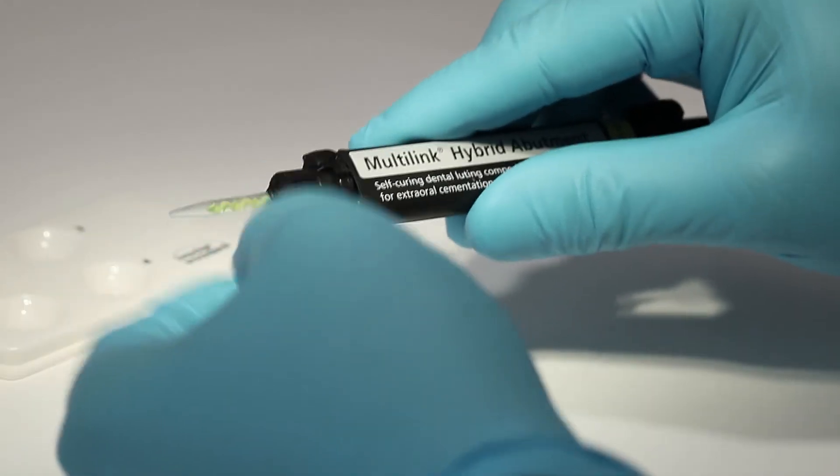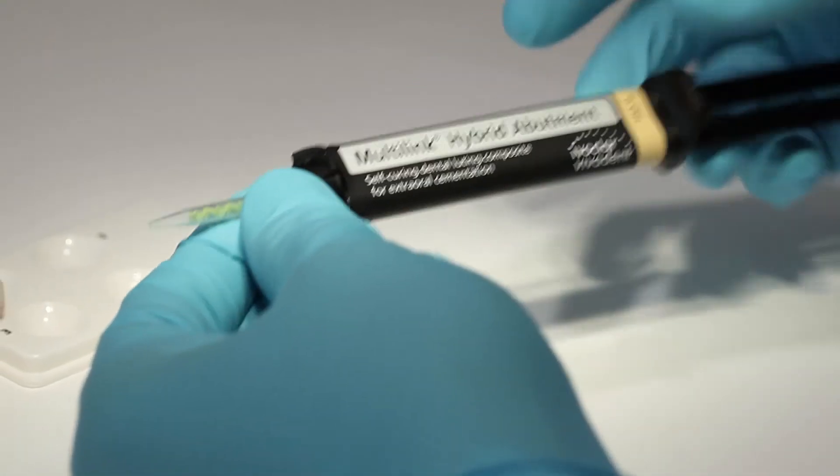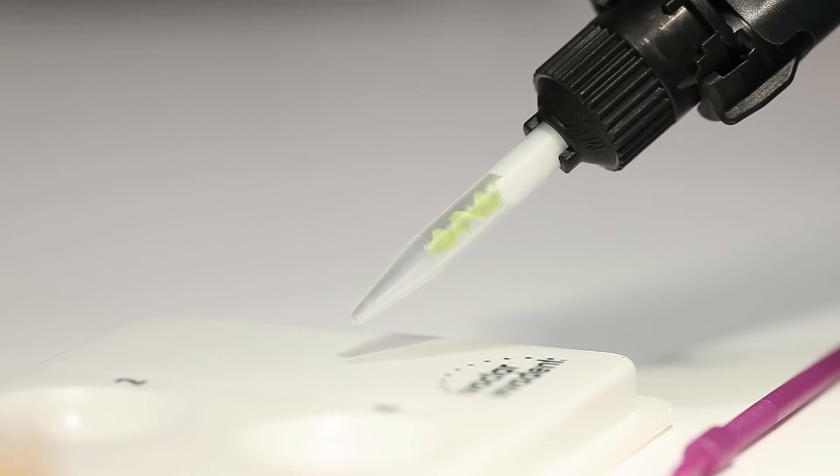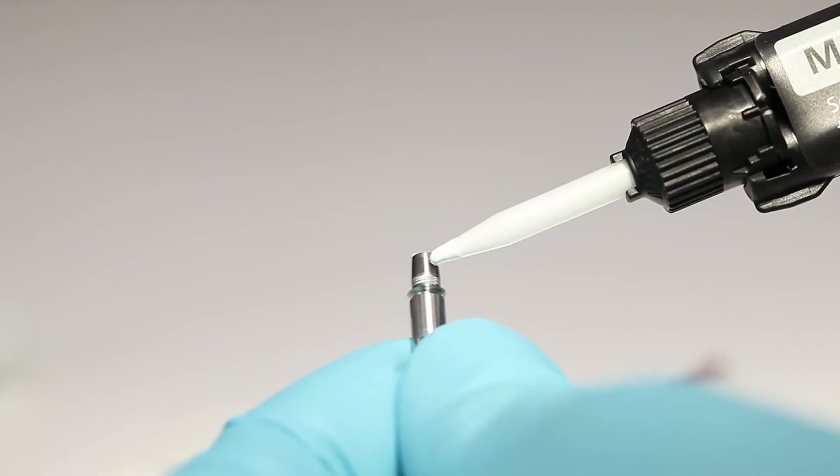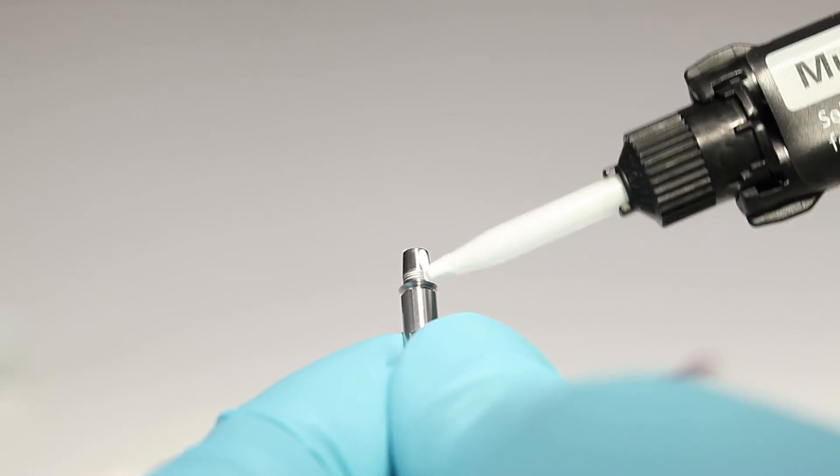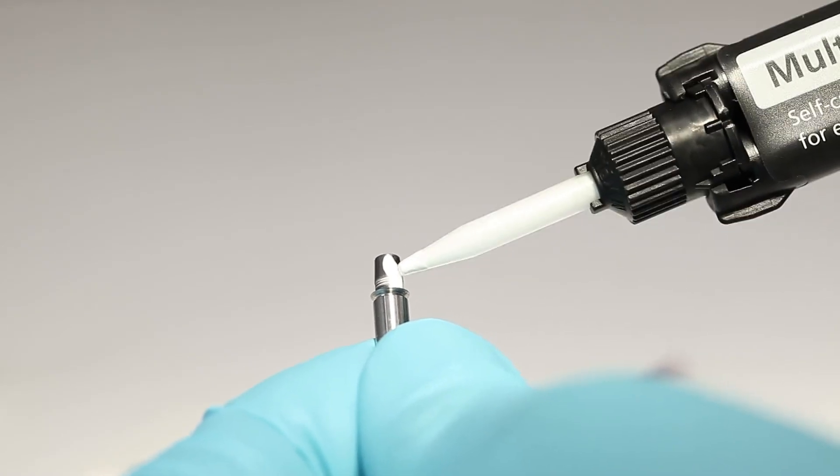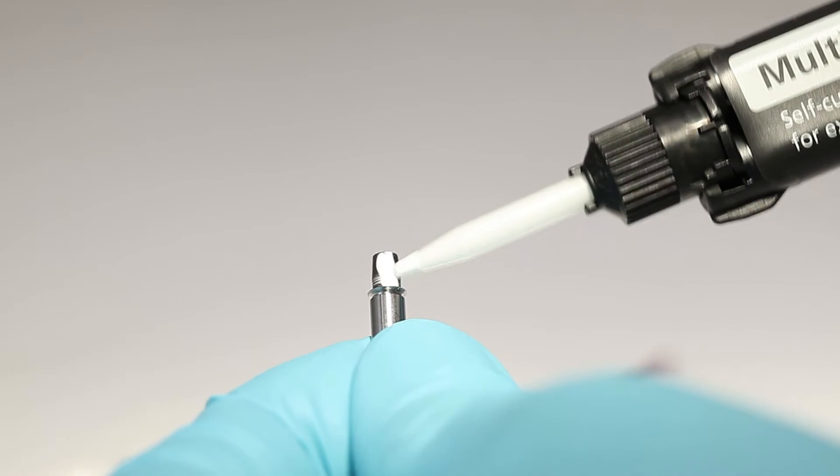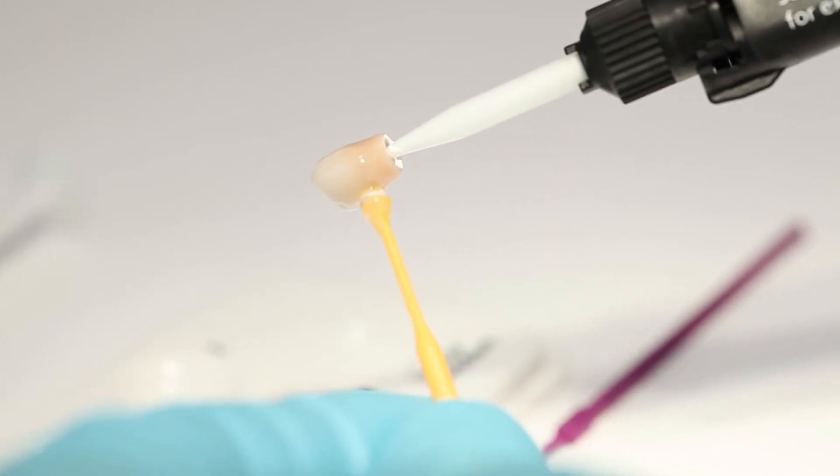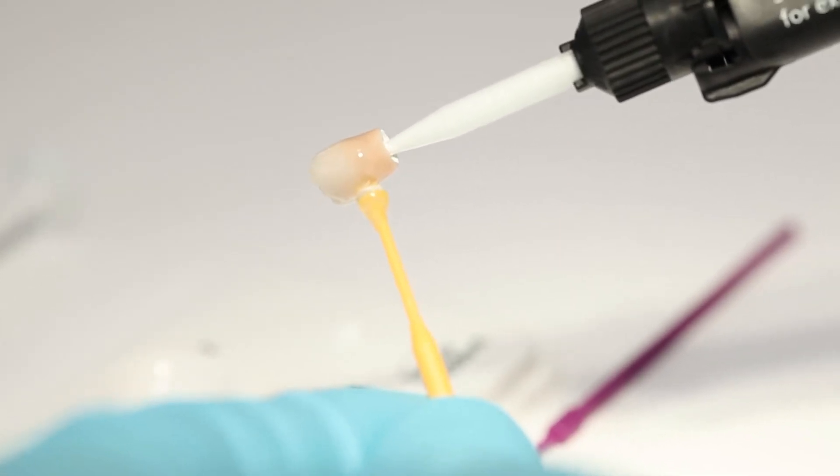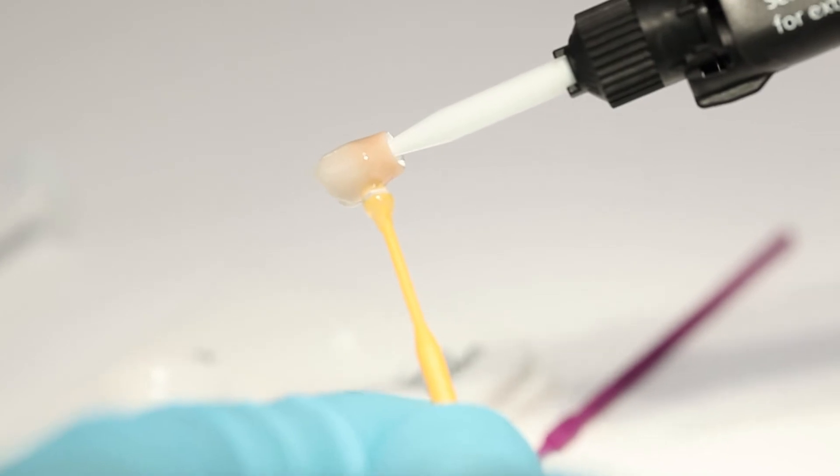Now cement the IPS-EMACS CAD ceramic structure to the tie base using the self-curing multi-link hybrid abutment luting composite. Apply a thin coating of multi-link hybrid abutment directly onto the bonding surface of tie base, then apply a thin coating to the bonding surface of the ceramic structure.